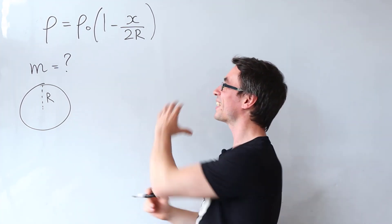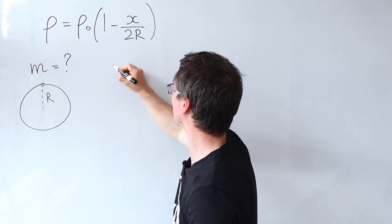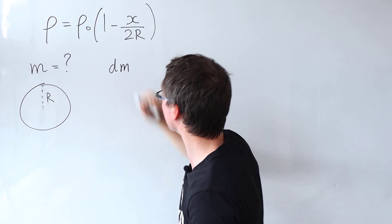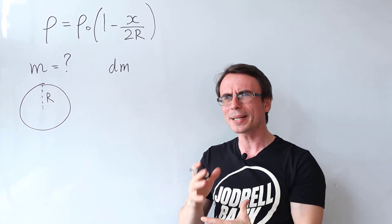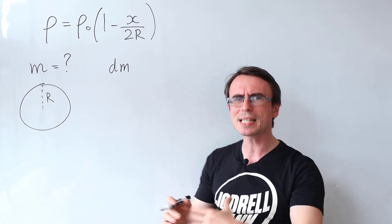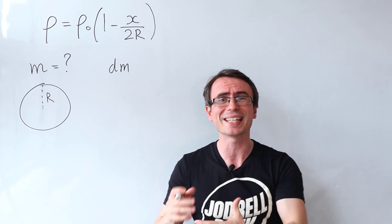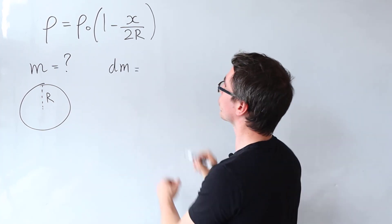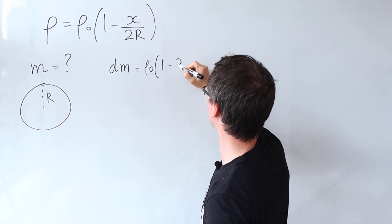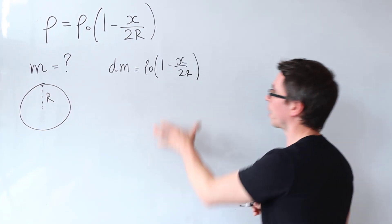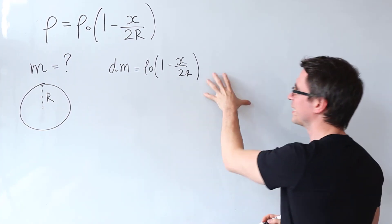Now in these problems in which the density is not a constant, it is always a great idea to consider a small mass dm. Well what will that be equal to? Generally it's equal to density times volume, but in this case it will be equal to the density multiplied by the infinitesimal volume. So this will be given by ρ₀(1 - x/2r). Now the infinitesimal volume, you can think of it as dV.